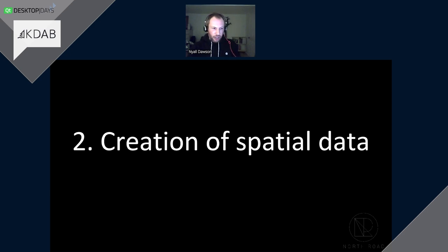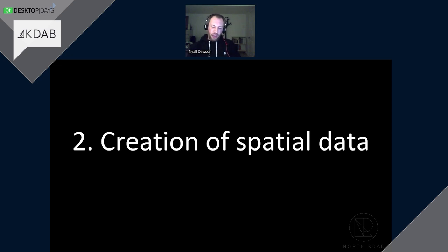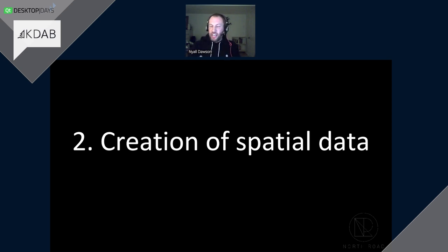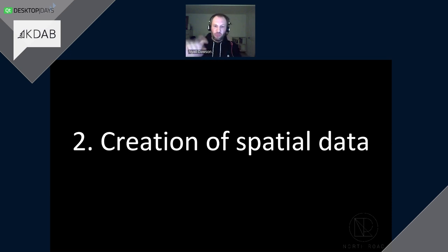The next task a GIS must support is actually creating spatial data. A GIS has CAD-like tools where you can draw objects on a map — for example, drawing the path a proposed road will take.